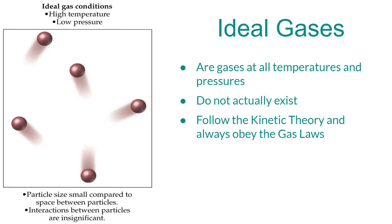Real gases, like oxygen or carbon dioxide, behave like ideal gases at high temperatures — so they're moving around really fast — or at low pressures, where they're not all squished together and are allowed to move around. As long as you're talking about high temperature and low pressure, every gas will have ideal behavior. But once you start lowering the temperature or raising the pressure, real gases behave a little differently.